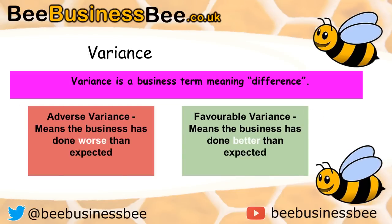Now I want to move on to something a little more complex. I want to introduce the word variance. Variance is a business term meaning difference. We've got two different types of variance in budgeting: adverse variance and favourable variance. Adverse means worse than expected, and favourable means better than expected. If you've got an adverse variance you've done worse than you budgeted; if you've got a favourable variance you've done better than you expected.